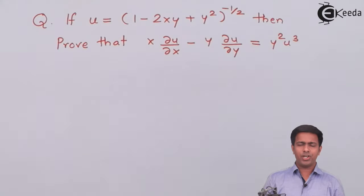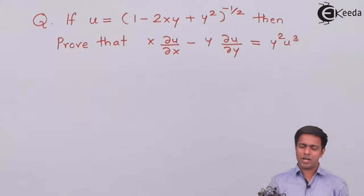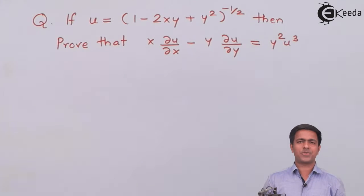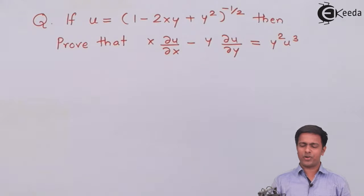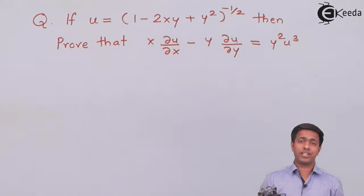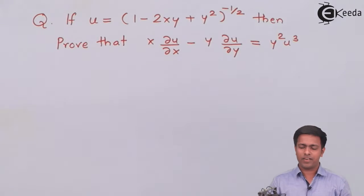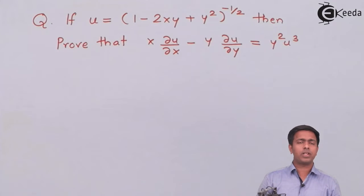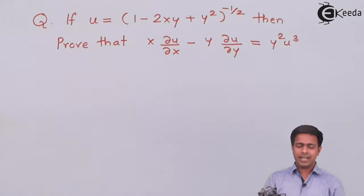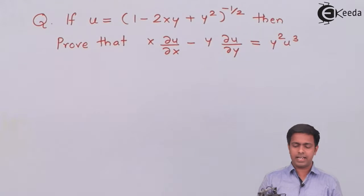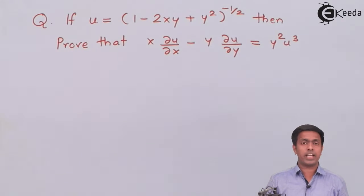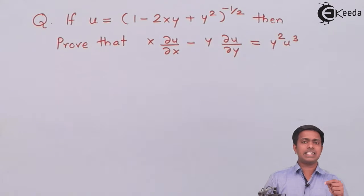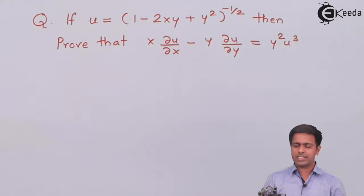U is given as (1 minus 2xy plus y squared) whole raised to minus half, and we have to prove that x ∂u/∂x minus y ∂u/∂y is equal to y squared u cubed.